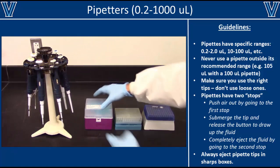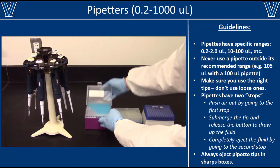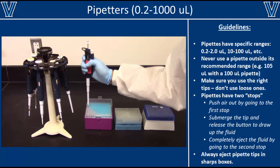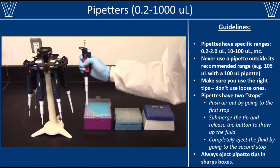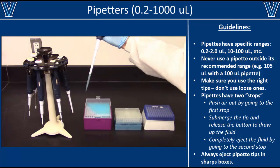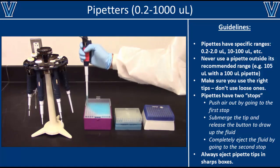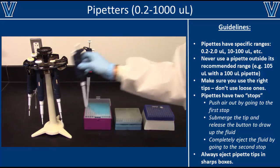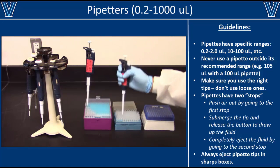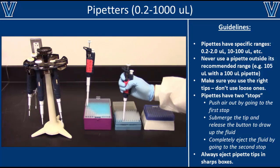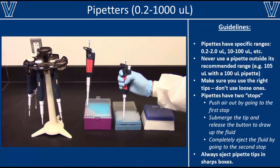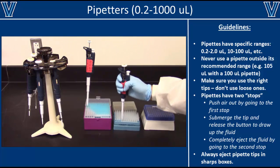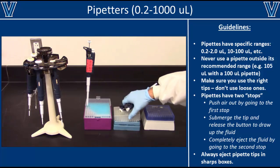Just as pipettes have unique volume ranges, they also require unique tips. For example, this P1000 requires large blue tips. Always make sure that the tips fit on snugly. If the tips fit on loosely or fall off, then they won't work properly and you'll need to find some other tips.